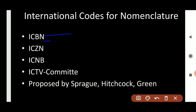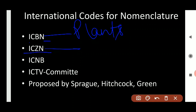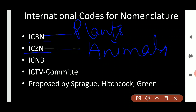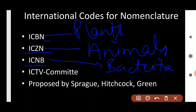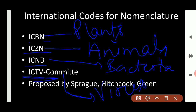ICBN is related to your plants — it stands for International Code for Botanical Nomenclature; Botany means it is related to plants. Second is ICZN, International Code for Zoological Nomenclature; Zoology is related to animals, so this is the organization for animals.